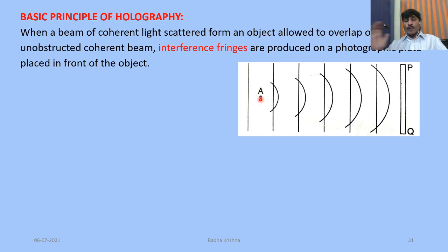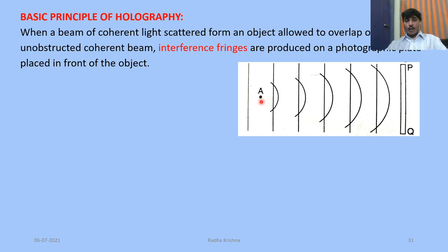The coherent beam is called a laser beam. After the laser beam is arranged, we have the object arranged. The light can be scattered or diffracted from the object.